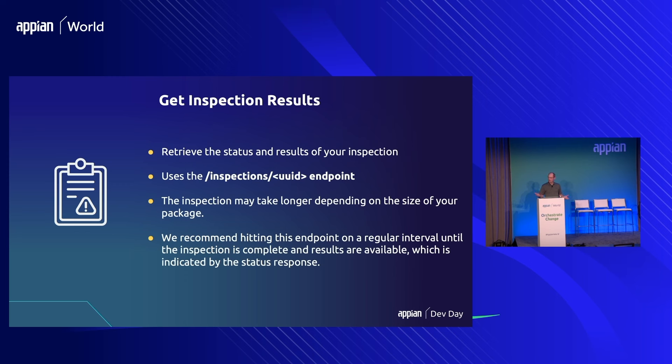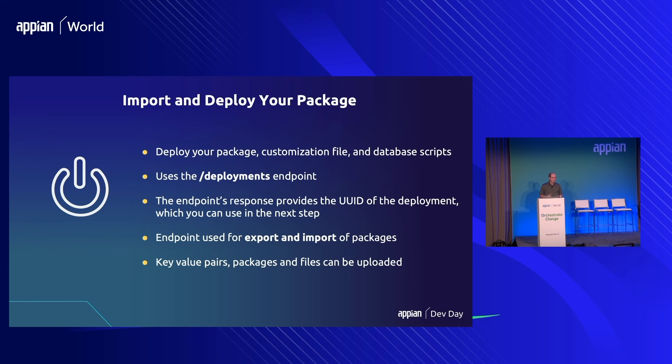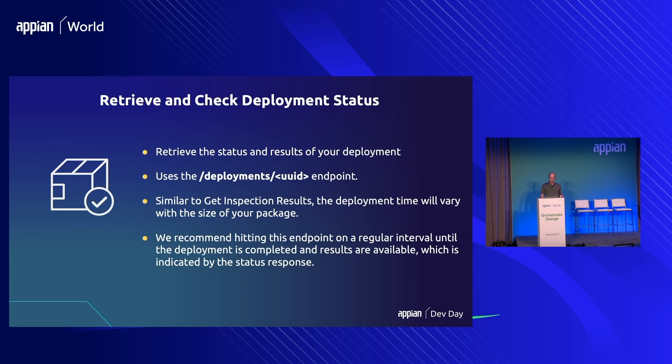Once the inspection is done and everything is clean — no errors in our inspection log — you move to the import and deploy step. It uses the same deployment API, just with 'import' on the action code this time, and you supply it with all the assets to upload: packages, database scripts, and the same stuff as in the inspection. It will upload and start a deployment process in the background on the destination environment. That's also asynchronous and returns a unique ID you can poll — the same pattern: start a process, wait for it to finish by polling, check the return codes, and then check the logs.